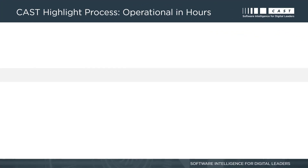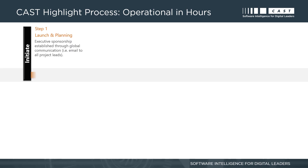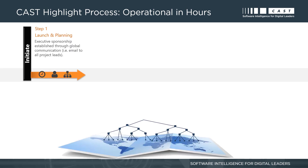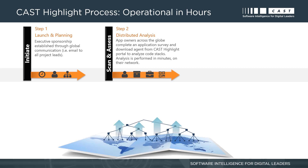The process for deploying CAST Highlight is very simple and can be operational in a matter of hours. It starts with launching and planning an assessment campaign — often executive sponsorship is established through some kind of communication, in addition to project leads and project owners. Step 2 is the source code analysis: application owners download a simple analyzer from the CAST Highlight portal and perform this analysis on source code locally in a matter of minutes.